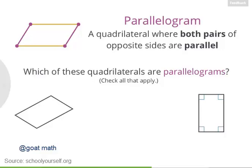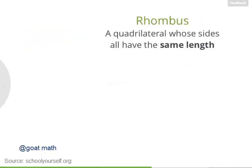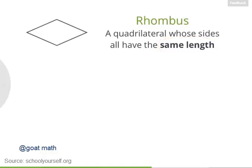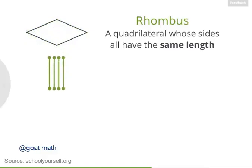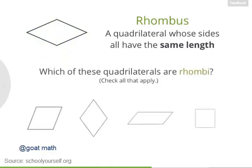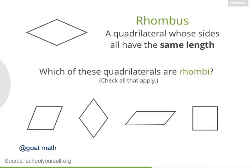Let's look at one more kind of quadrilateral — a rhombus. A rhombus is a quadrilateral whose sides all have the same length. Here's an example of a rhombus because all four of its sides have the same exact length. Now which of these quadrilaterals are also rhombi? And yeah, the plural of rhombus is rhombi.